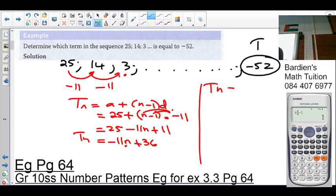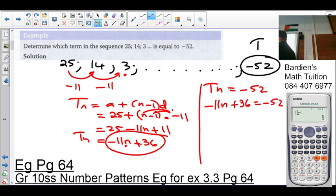So what do I do? I say Tn equals negative 52, but what is Tn? It's negative 11n plus 36 equals negative 52. So what does this now become to us? An equation. You guys understand? So we solve for n. Negative 11n equals negative 52 minus 36, which is negative 88. So n equals 8.